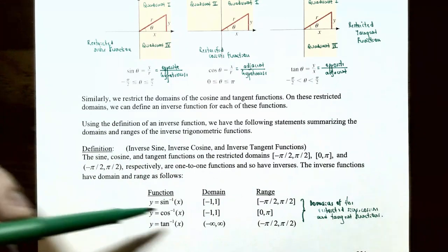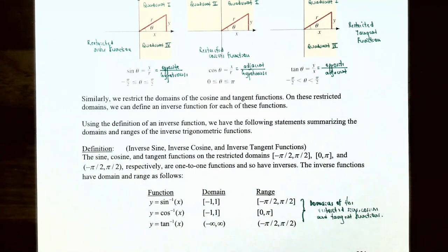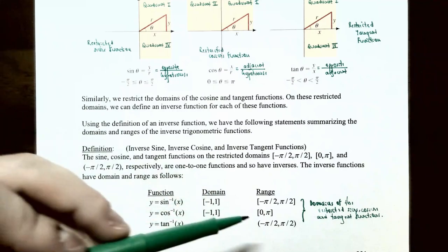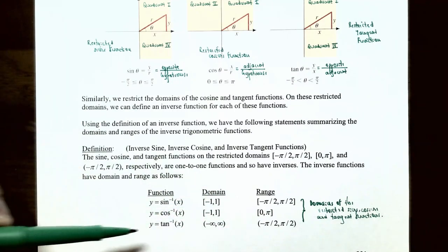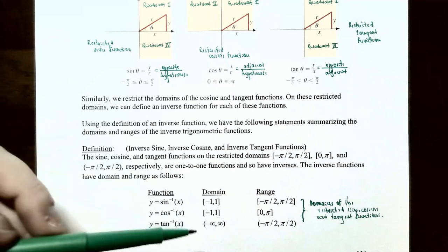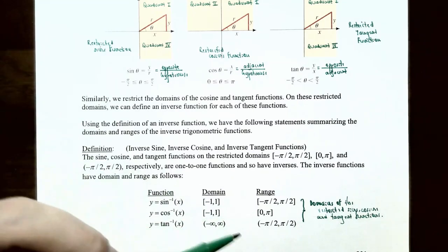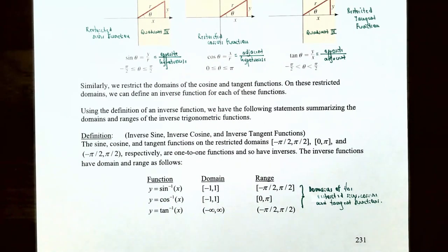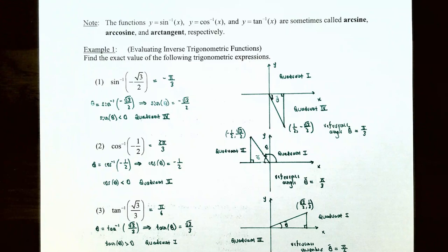Y = arccos(x) has domain [-1, 1] including the endpoints, and range [0, π] including the endpoints — which was the domain of the restricted cosine function. Y = arctan(x) has domain of all real numbers from negative infinity to infinity, and range from negative pi over 2 to pi over 2, not including the endpoints. Recall that the domain of the original function is the range of the inverse function, and vice versa. These functions are also called the arc sine, arc cosine, and arc tangent functions respectively.